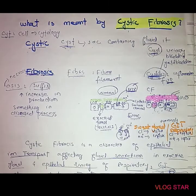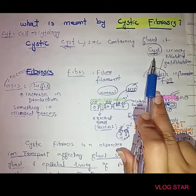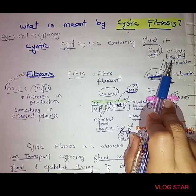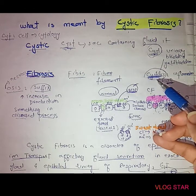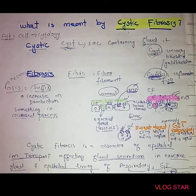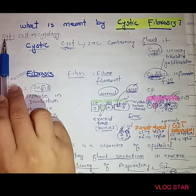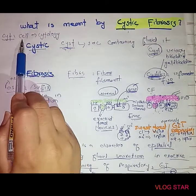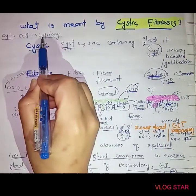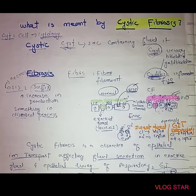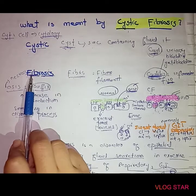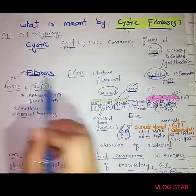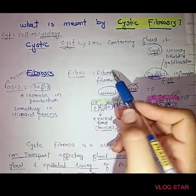When the fluid becomes solidified in a form, this is referred to as cystic. Fibrosis refers to inflammation or infection involving fiber or filament.